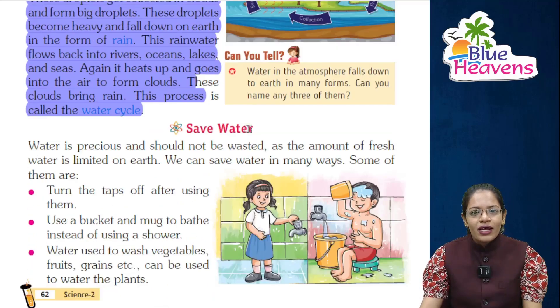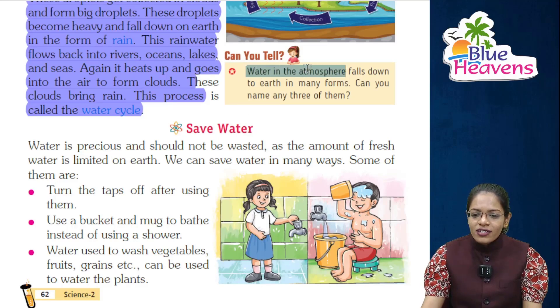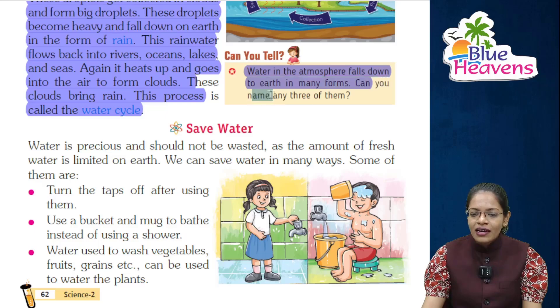Now, can you tell — water in the atmosphere falls down to earth in many forms. Can you name any three of them?